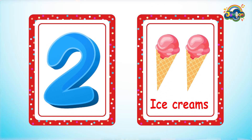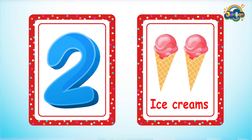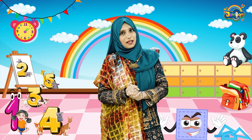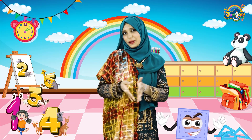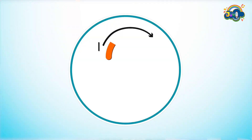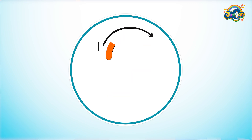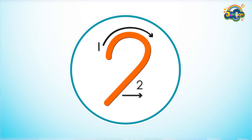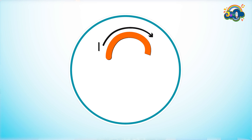Next, number 2 — 2 ice creams. So let's write the number 2. For writing number 2, draw a curve from top to the bottom and a small slipping line. It's number 2.